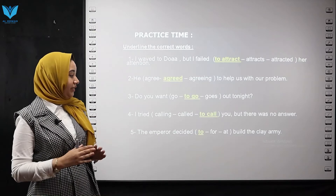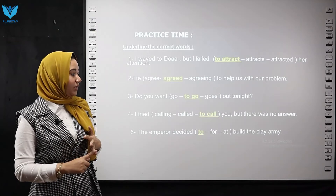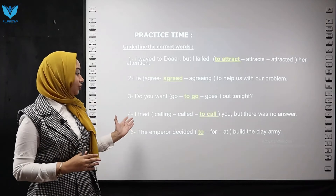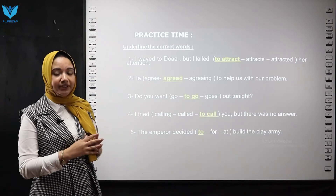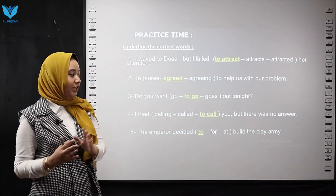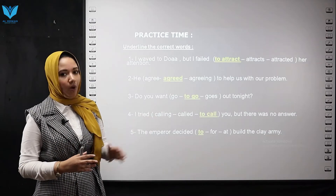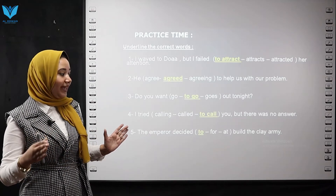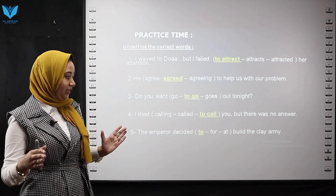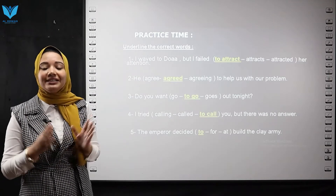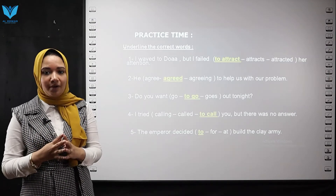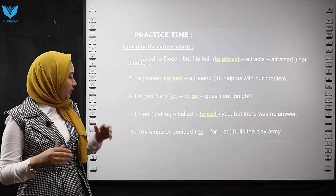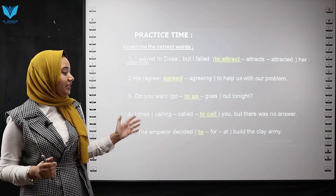Number four: I tried — calling / called / to call — you, but there was no answer. After 'try,' we put 'to' plus the base form, so I choose 'to call.' Number five: The emperor decided — to / for / add — build the clay army. After 'decided,' we put 'to' plus the base form, so I choose 'to.' The sentence is: The emperor decided to build the clay army.